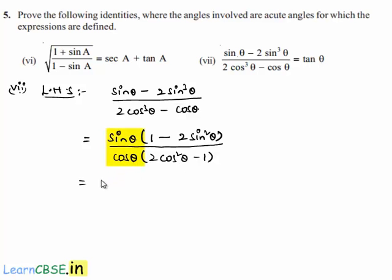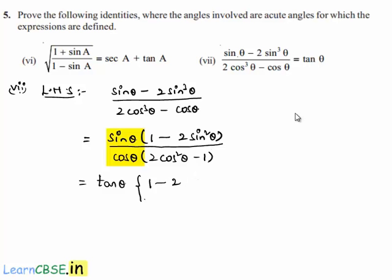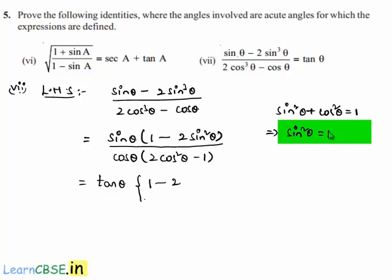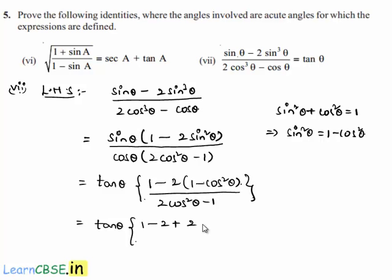If we write sin θ / cos θ separately, it is tan θ × (1 - 2sin²θ) / (2cos²θ - 1). Using the identity sin²θ + cos²θ = 1, which implies sin²θ = 1 - cos²θ, we substitute to get tan θ × (1 - 2(1 - cos²θ)) / (2cos²θ - 1), which gives tan θ × (1 - 2 + 2cos²θ) / (2cos²θ - 1), that is tan θ × (2cos²θ - 1) / (2cos²θ - 1).